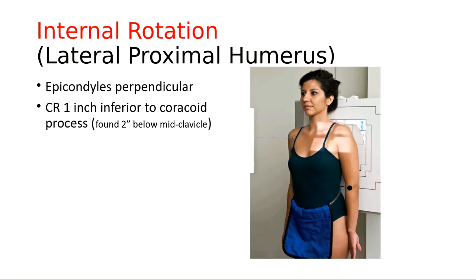Then we do the internal rotation, found on page 192. All you do is tell the patient to hold still after the external rotation exposure, which is made on suspended respiration. Inspiration or expiration is fine — just have the patient suspend breathing so they're not moving during the exposure.